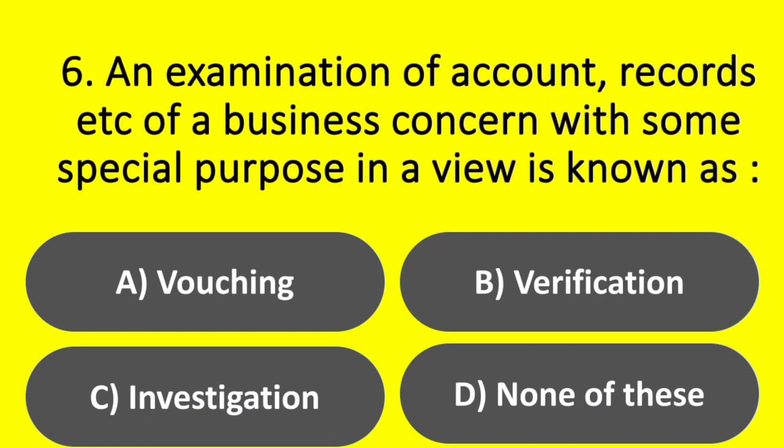Question. An examination of accounts, records, etc. of a business concern with some special purpose in view is known as: Option A – Vouching. Option B – Verification. Option C – Investigation. Option D – None of these.